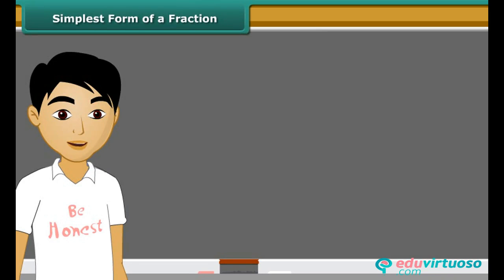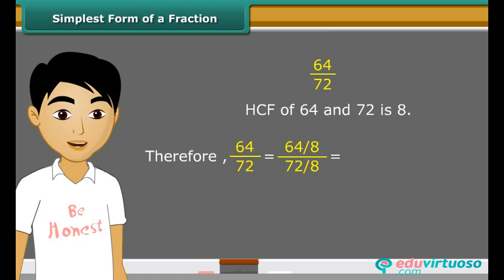Students, the second method to find the equivalent fraction in the simplest form is to find the HCF of the numerator and denominator, and then divide both of them by the HCF. Consider fractions 64 upon 72. The HCF of 64 and 72 is 8. We get new fraction 8 upon 9 on dividing the numerator and denominator both by HCF.